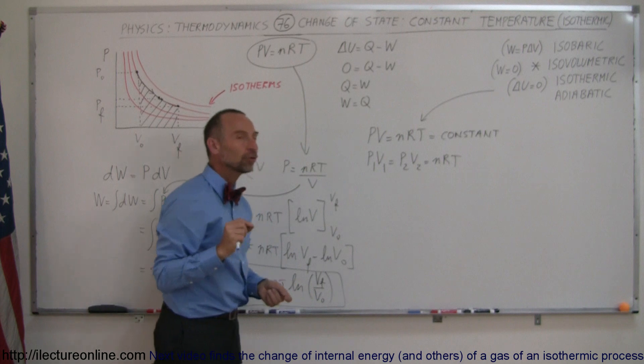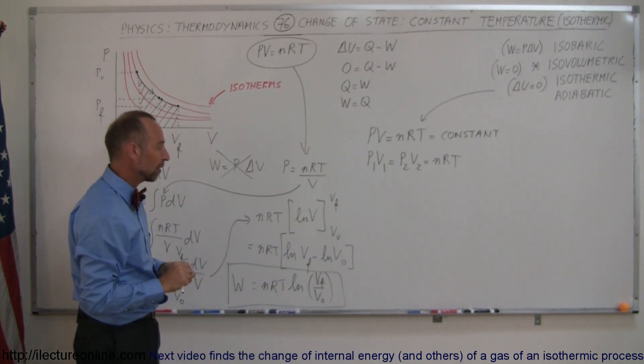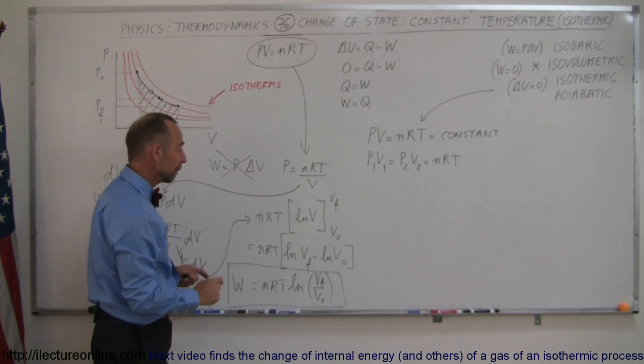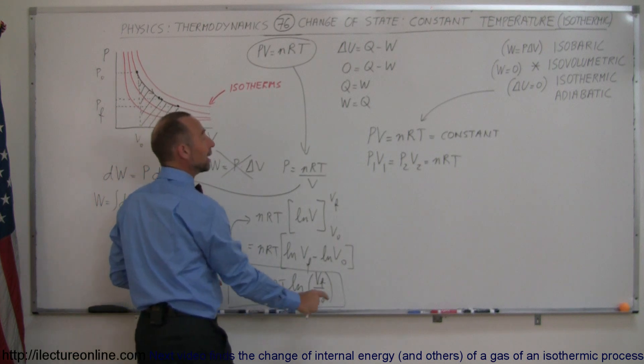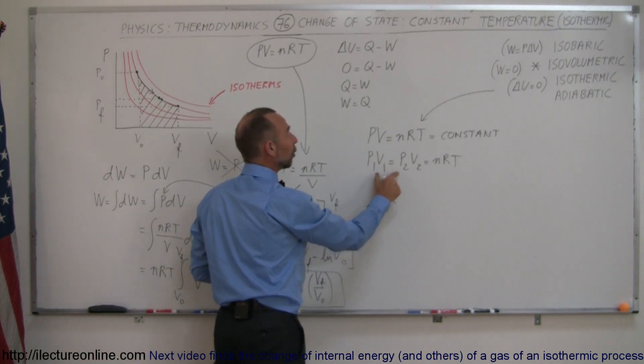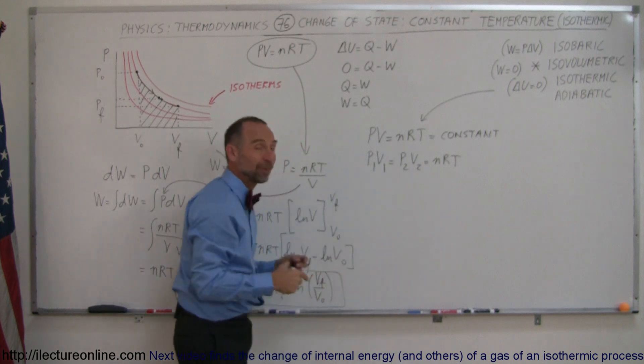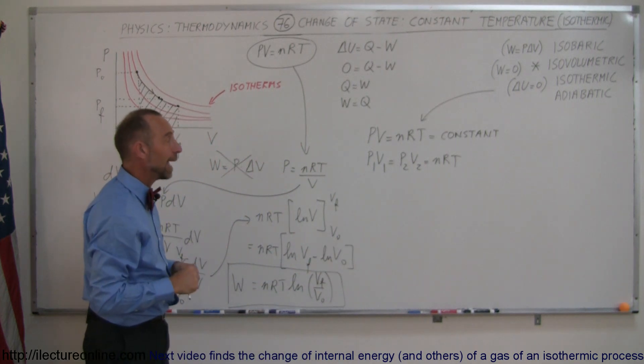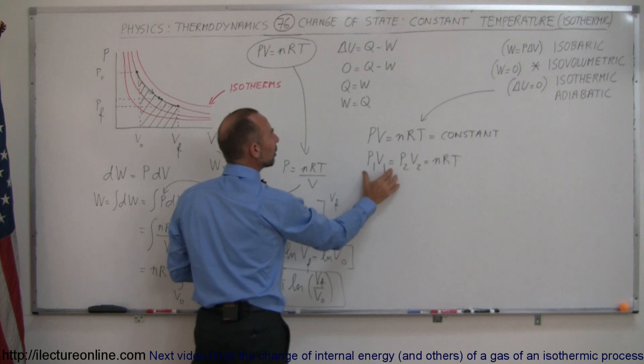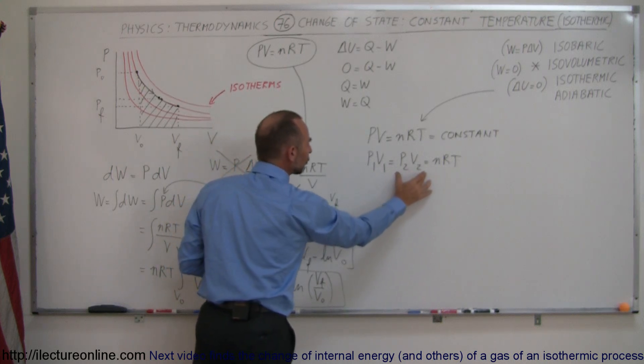That implies that p1 v1 is equal to p2 v2, which is equal to nRT. So if you do not know what the temperature is of this process, you can actually solve for the work done by replacing nRT by either the initial pressure and volume, or the final pressure and volume, or the pressure and volume anywhere along that path. But typically speaking, you would either know the initial pressure and volume or the final pressure and volume.